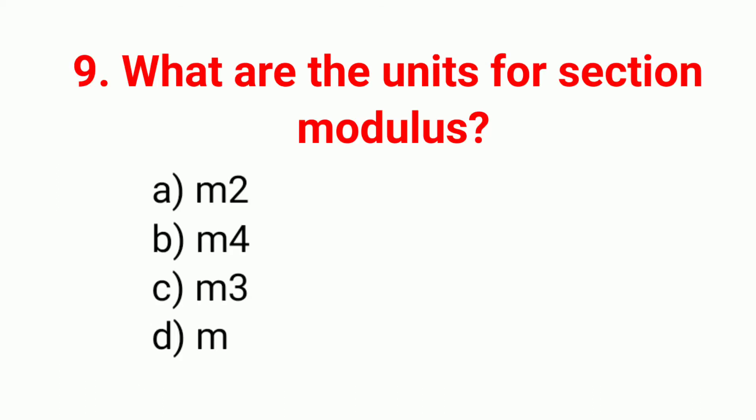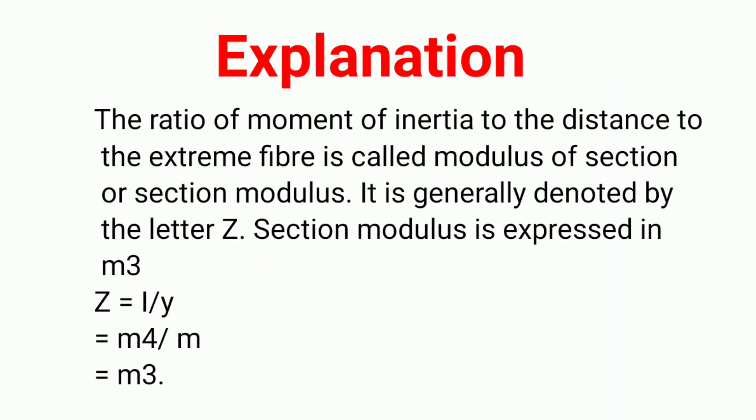Question 9: What are the units for section modulus? The right answer is option C, meter raised to cube. Explanation: the ratio of moment of inertia I to the distance to the extreme fiber Y is called the modulus of section or section modulus, generally denoted by Z. Section modulus Z = I/Y = m⁴/m = m³, so it is expressed in units of meter cube.